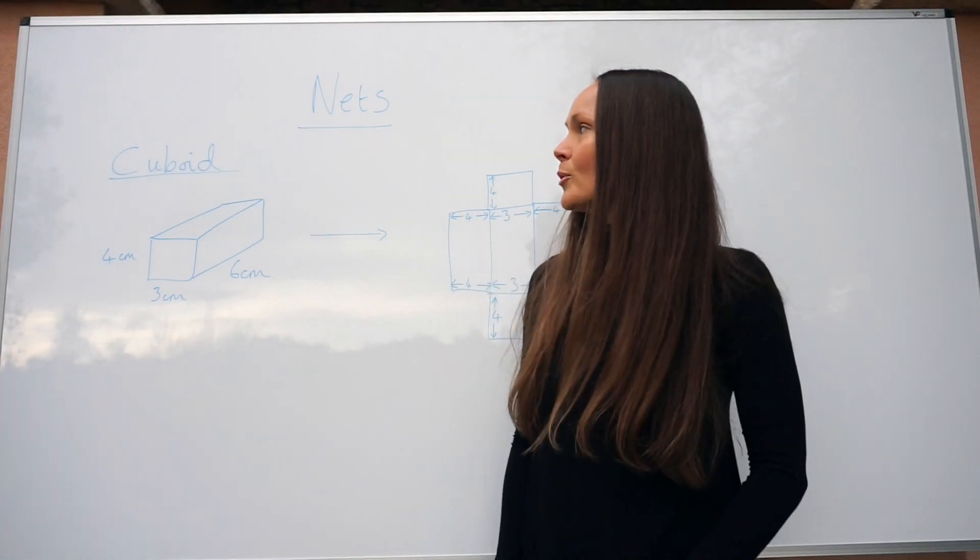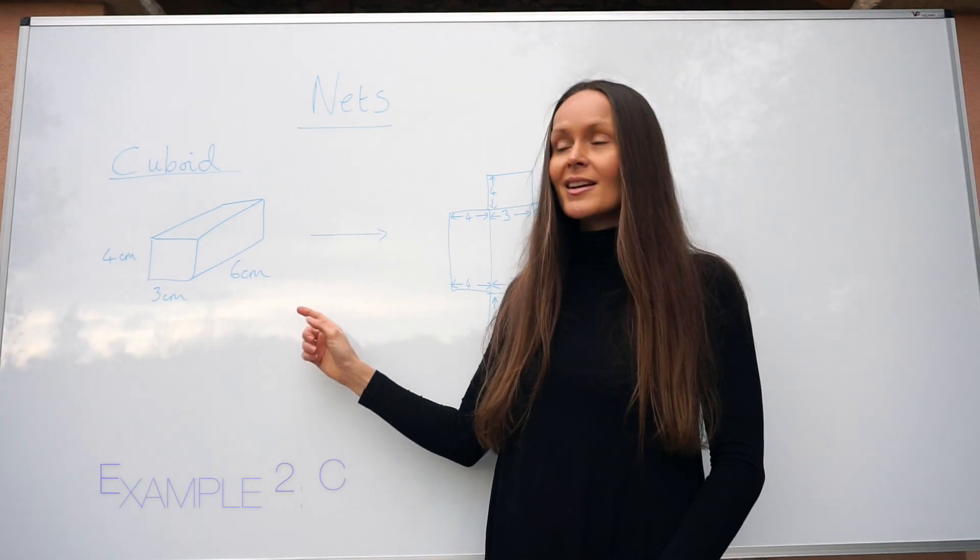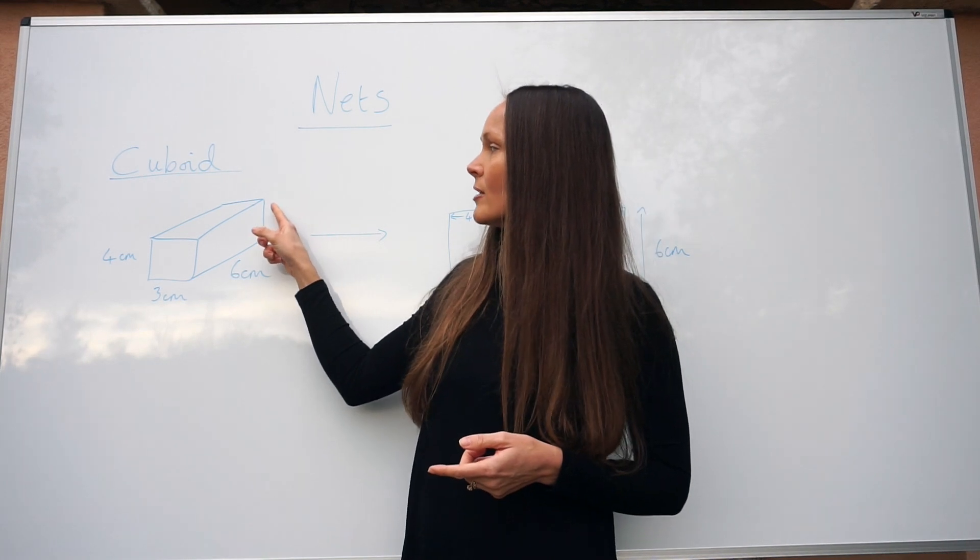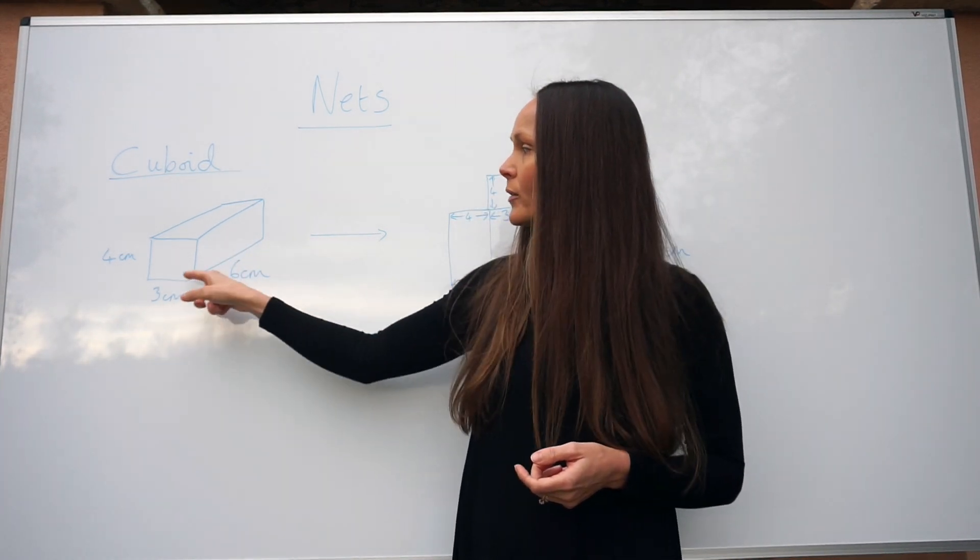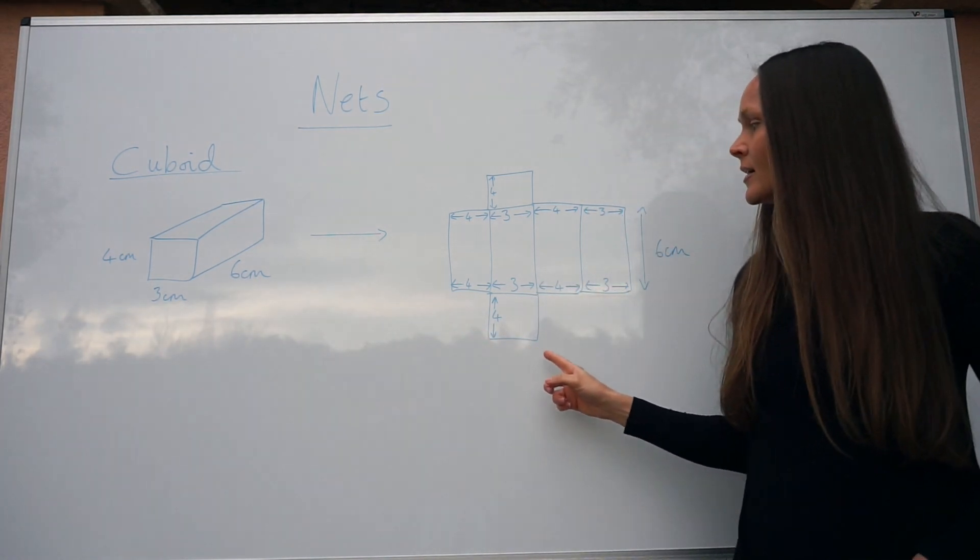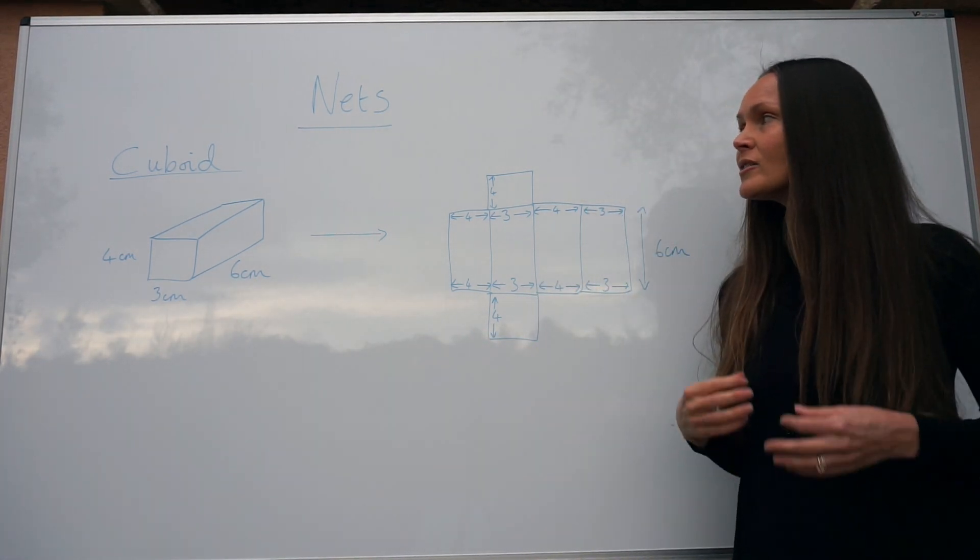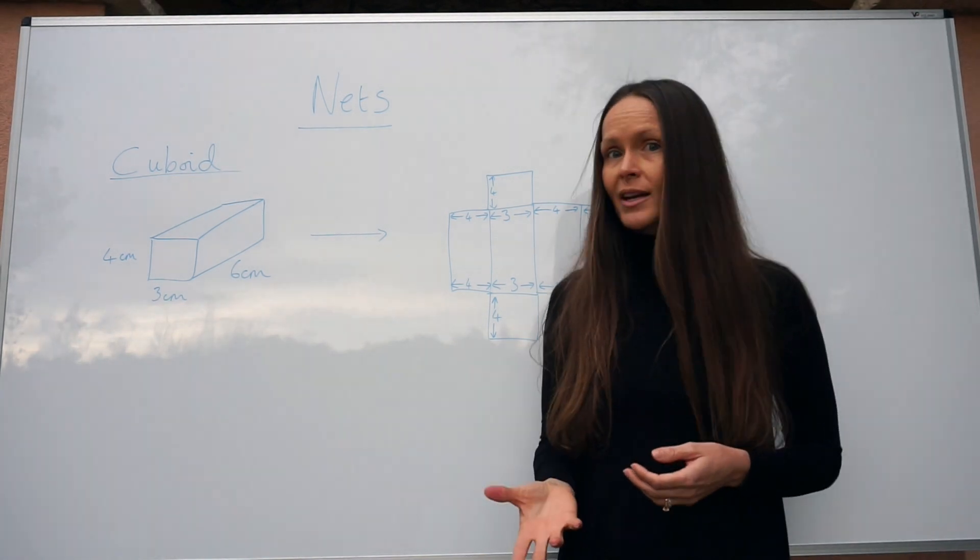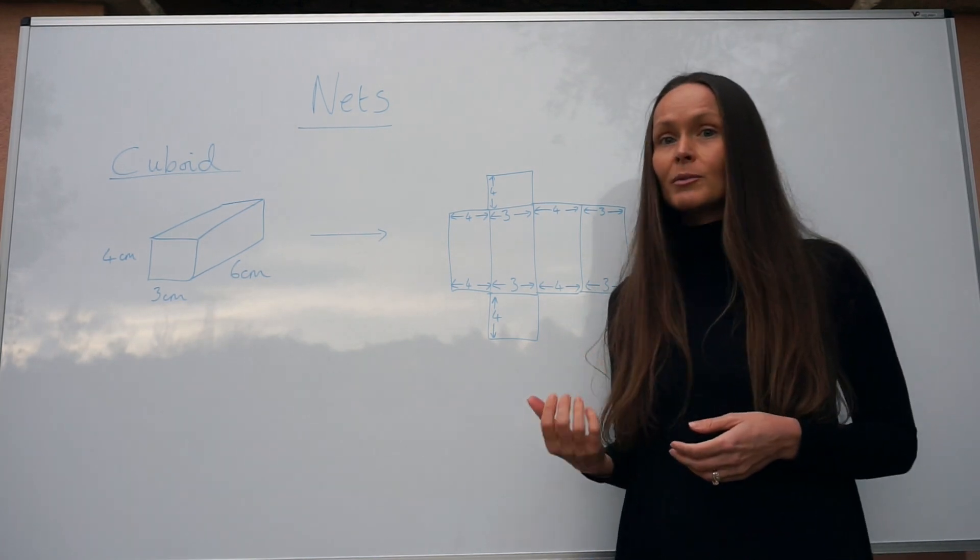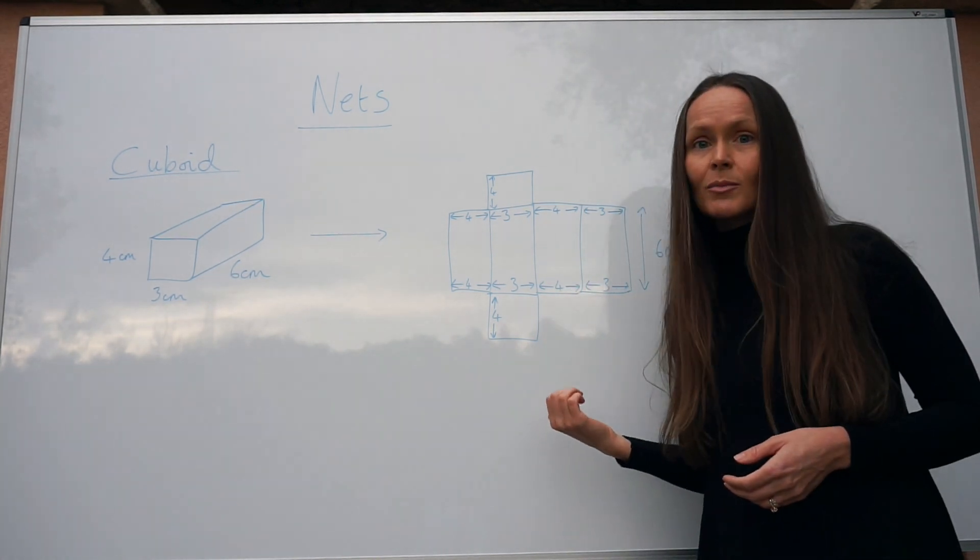In my next example I have drawn a cuboid. It's quite similar to the cube except this time it consists of some rectangular faces. Not all the edges are the same length, and here I have drawn a net. Remember there's more than one way of drawing a net, so it doesn't have to look like this, but this is typically how I would draw a net and how I would teach my students to draw nets.